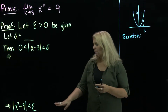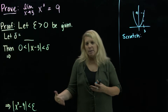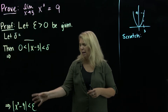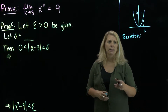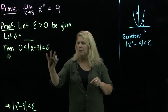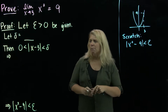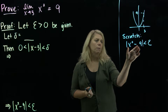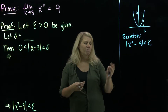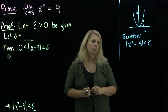On our scratch work, we often work backwards. The direction of implication for the proof goes forward — we need to start with one thing and have it lead to another — but just like solving a puzzle, sometimes you work backwards. So we start with the absolute value of x squared minus 9 less than epsilon and try to work back toward an expression involving x minus 3. You might notice that x squared minus 9 factors, and one factor is x minus 3, so we'll do this problem using factoring.